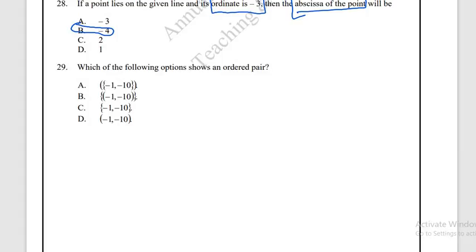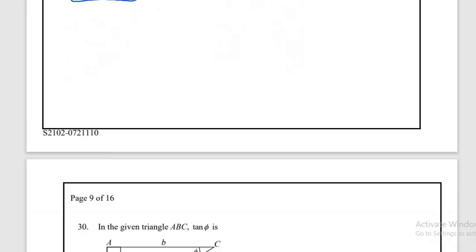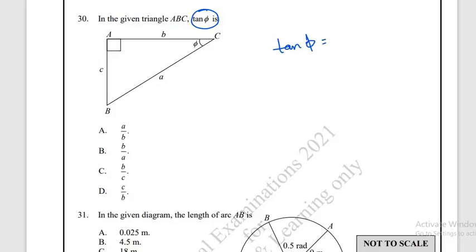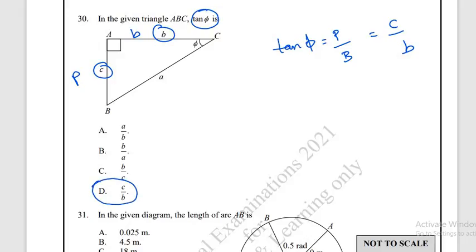Question number 29: which option correctly shows an ordered pair? An ordered pair is written with two parentheses, with the x-coordinate and ordinate separated by a comma. The correct answer is option D.